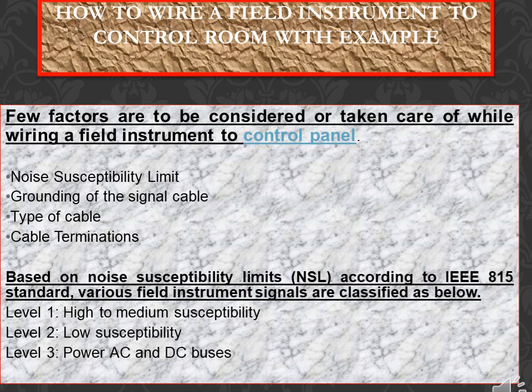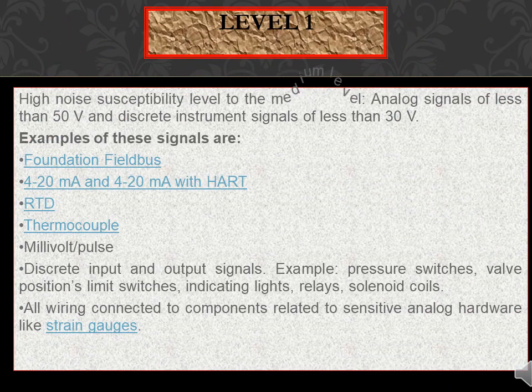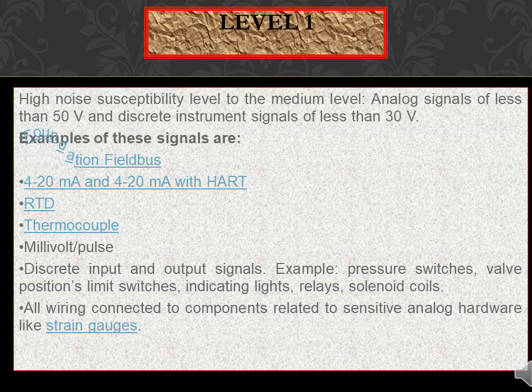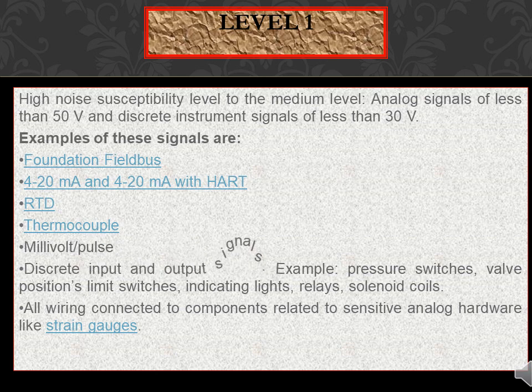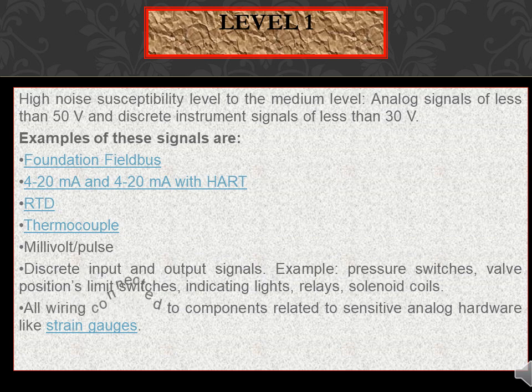According to IEEE 815, various field instrument signals are classified as follows: Level 1 — high to medium susceptibility; Level 2 — low susceptibility; Level 3 — power AC and DC buses. Level 0/1 covers high noise susceptibility signals, including medium-level analog signals of less than 50 volts and discrete instrument signals of less than 30 volts.